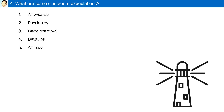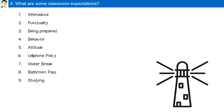Students are expected to have a positive attitude throughout the course. The cell phone policy: students are not allowed to display a cell phone at any time unless permission is granted by the instructor. It is advised that you bring a bottle of water so you don't need to leave the room. For the bathroom, you will present a bathroom signal giving a peace sign and you will be allowed to go. You are expected to study chemistry every day in order to keep up with the work.